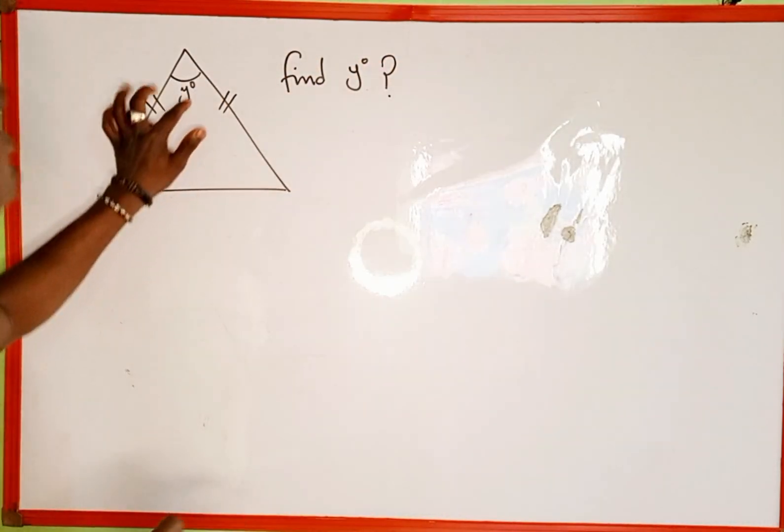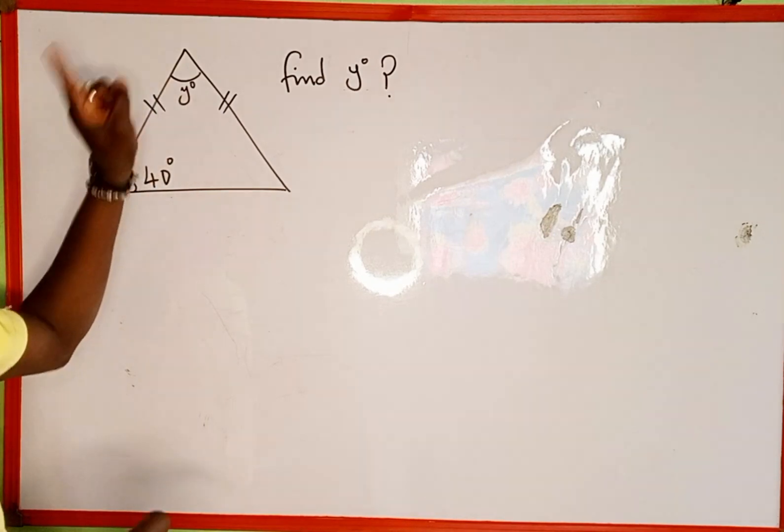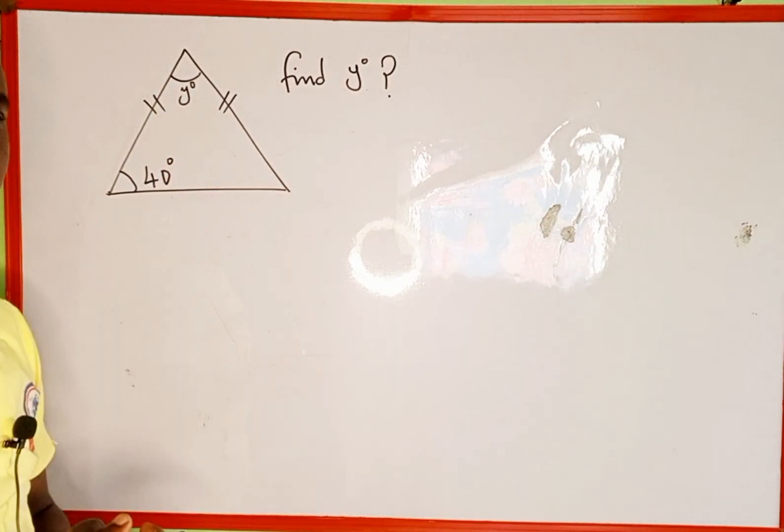In the given triangle, we have the first angle of y degrees which is missing and we have 40 degrees here.